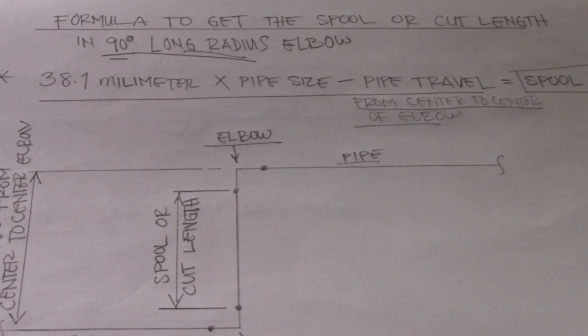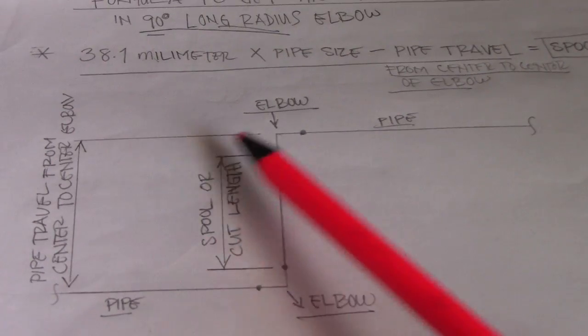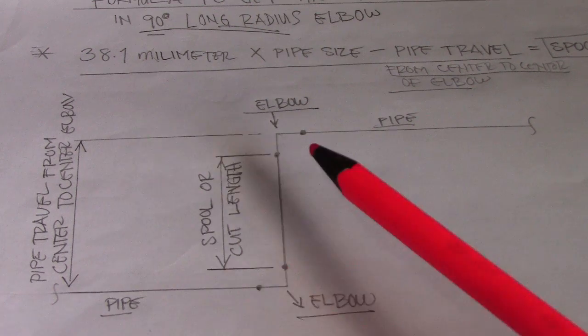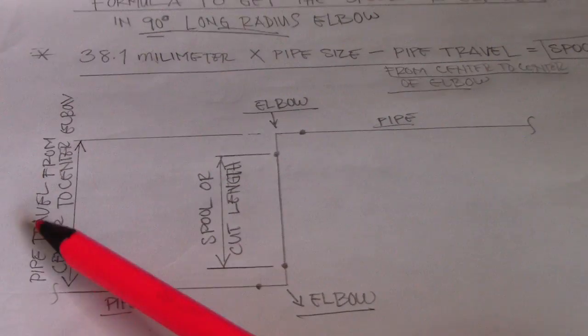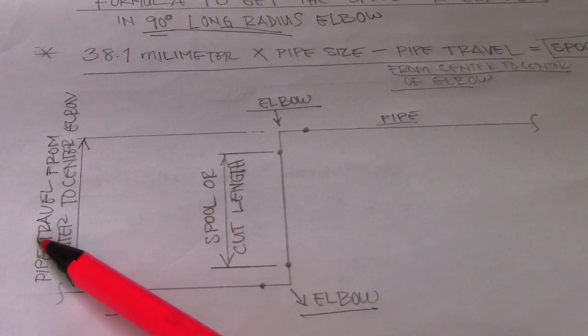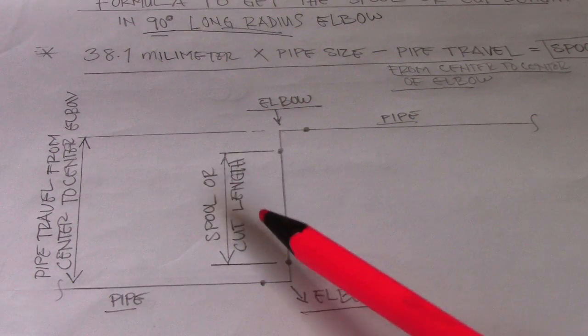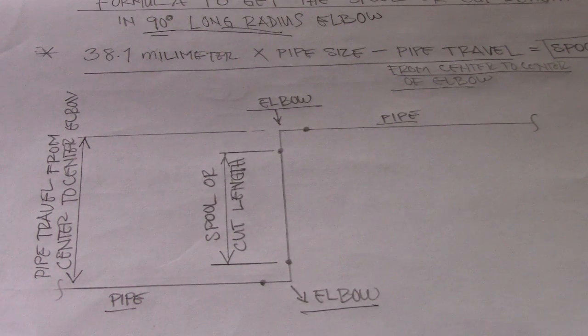And then minus the pipe travel. So this is the pipe travel and center to center of elbow. So let's say this is our dimension center to center of elbow and then minus it here to find this spool cut length.